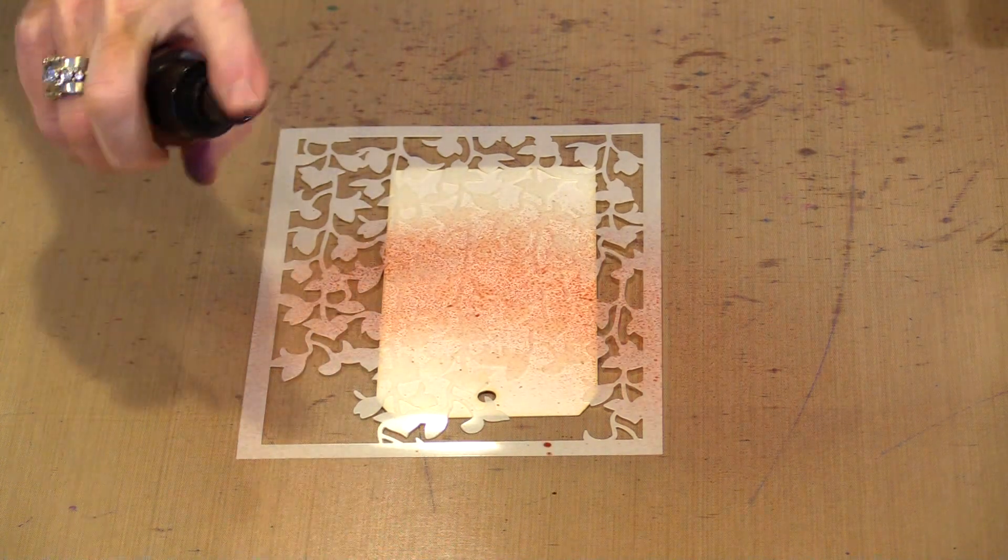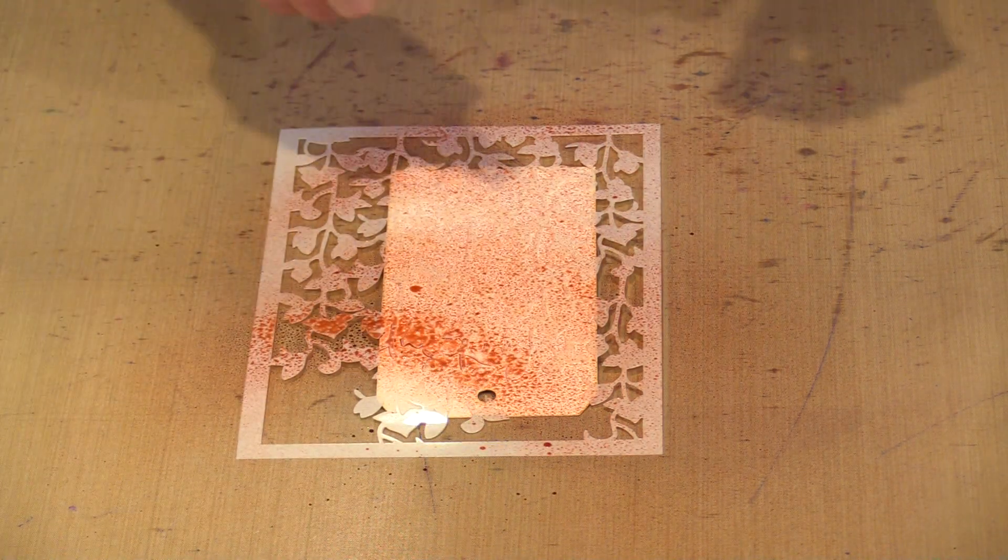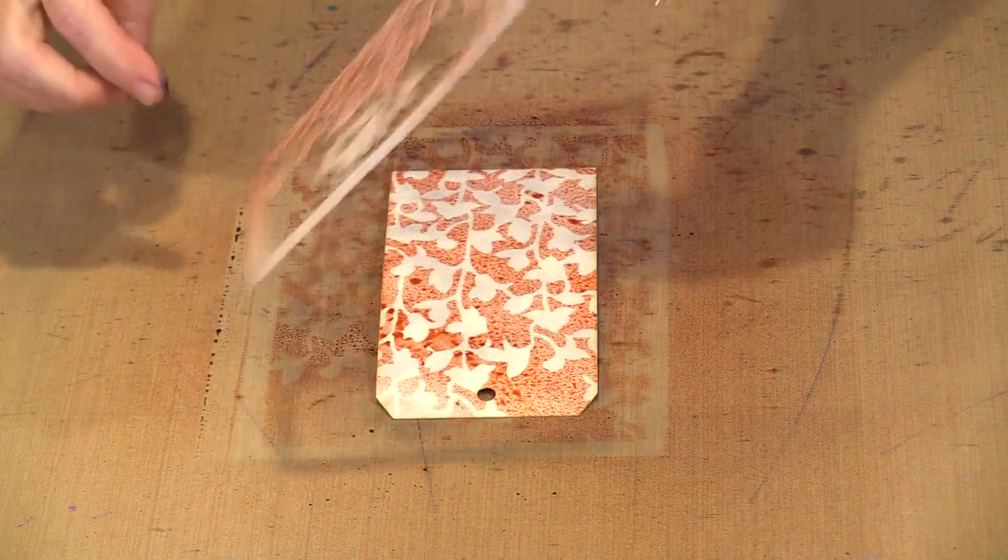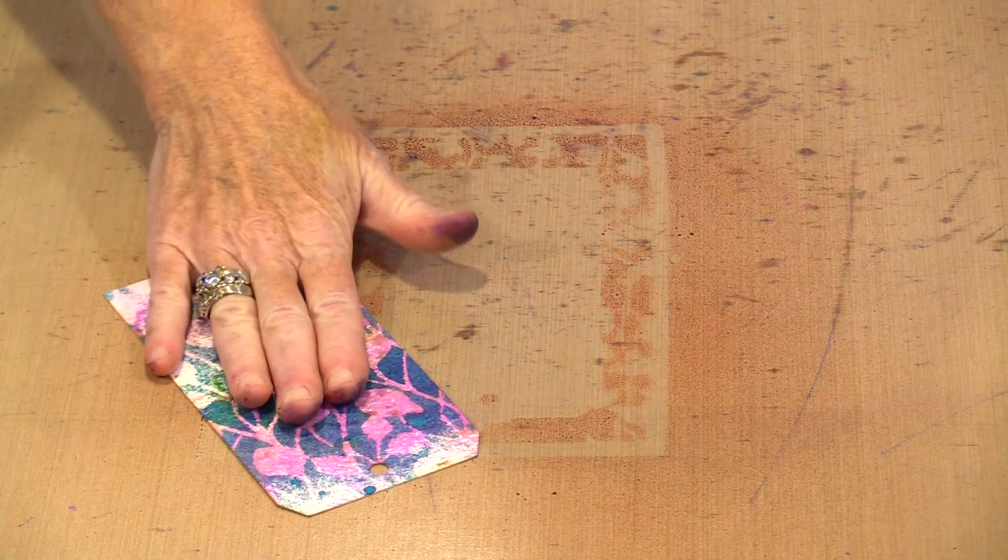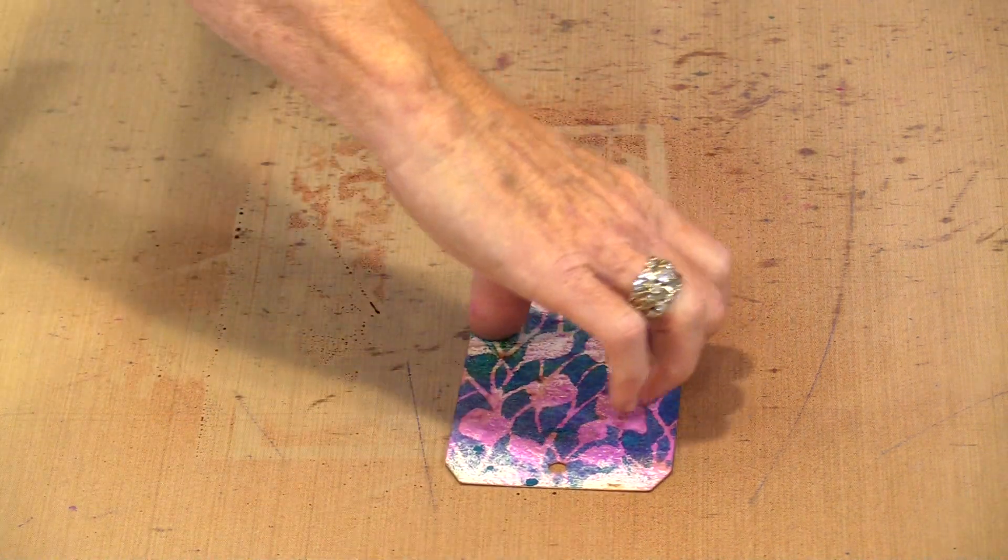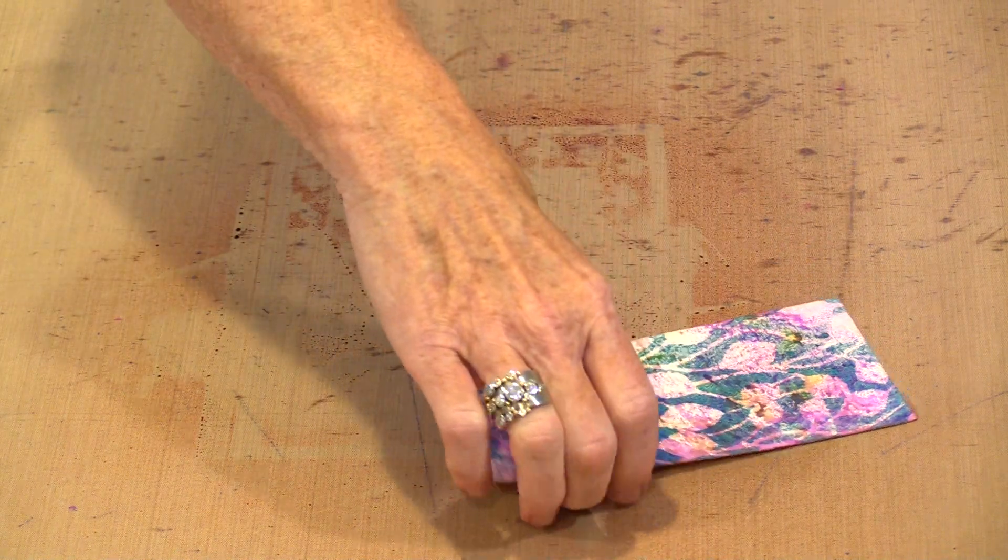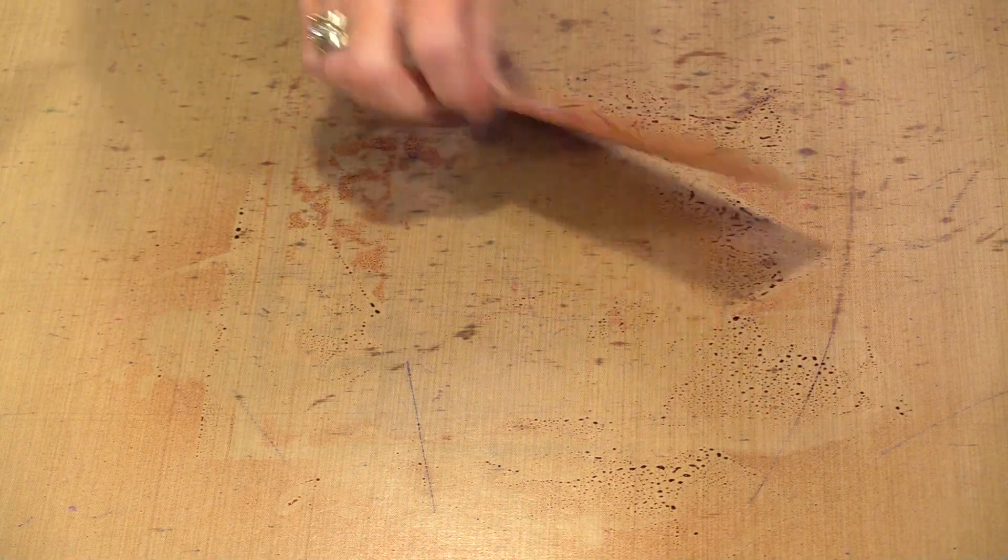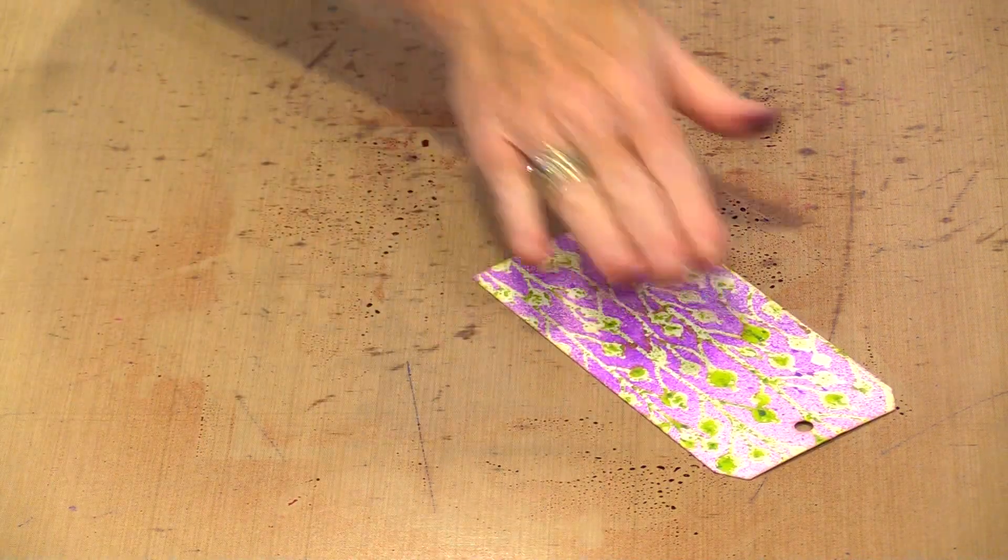I'm going to start with this color. I want to make sure I get enough on there. This is Orchid—it's a really pretty design. Let's toss that out of the way. Now before I bring anything else in, I'm going to start mopping this up using one hand, because I have the stencil held in the other.